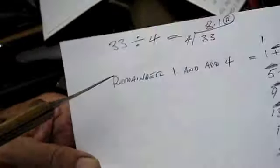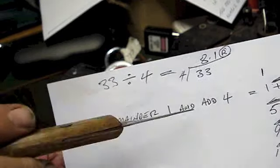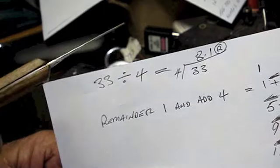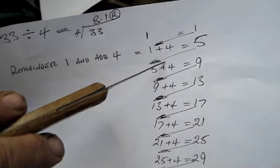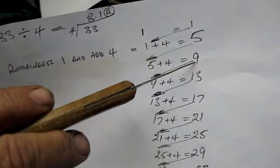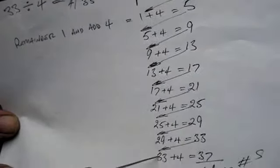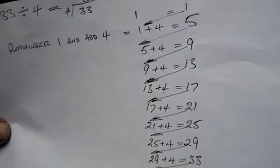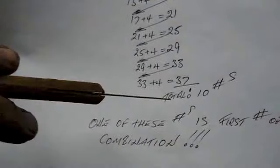And move on to the next step. Now, with that thirty-three, we divide that by four. And it gives us, in this case, eight point one. We're not interested in the eight. We're interested in the remainder. In this case, one. To that remainder one, we add four. So here's our one. We transfer it over here. Add four to it. It's five. We transfer the five over here. Add four to that. It's nine. Transfer that across. Nine and add four. It's thirteen. Thirteen and add four is seventeen, and so on and so forth. We'll end up with ten numbers. One of those numbers will be the first number of our combination. But we have to find out which one it is.